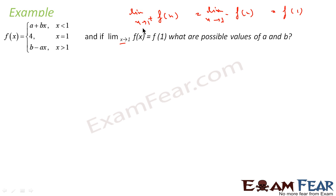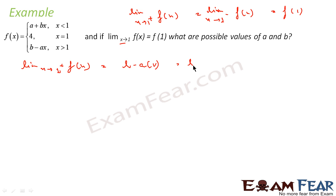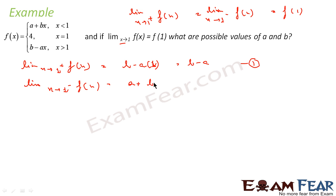For the right hand limit, x is tending to 1 plus. So that is the limit of x tends to 1 plus of f(x). For 1 plus, we use the function b minus a, so that gives b minus a into 1, that is b minus a. Similarly, for the left hand limit, we use the function a plus b because x is less than 1. This will be a plus b into 1, and that will be a plus b.